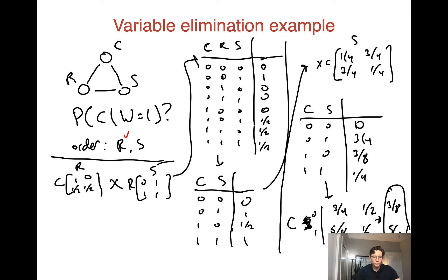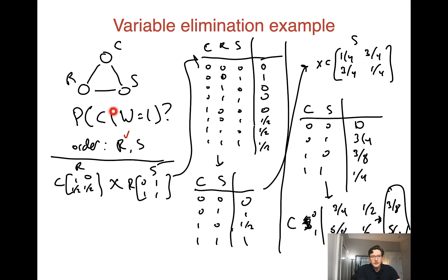Just as a recap: we took our Bayesian network, converted it to an MRF by converting it to its constituent factors, incorporated our evidence, then did our elimination — eliminated R first, then S — and then we were done.